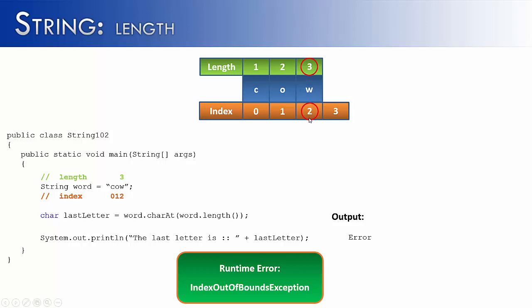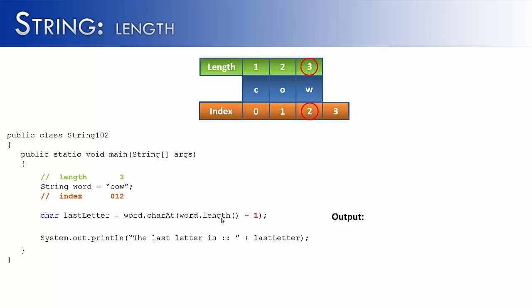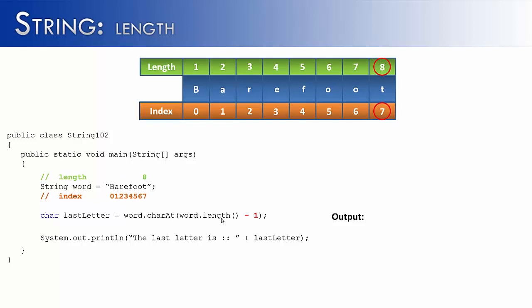And so what we're going to do is we're simply going to subtract one from the length. When I run this now, instead of giving me an error, it's going to say the last letter is w. And this is going to be true for any word that I use inside of this program. And I'll show you because if I revert back to the word barefoot, I'm still going to get the last letter is t. And I didn't have to change the code in any way. So this can be a useful tool for finding the end of a string.